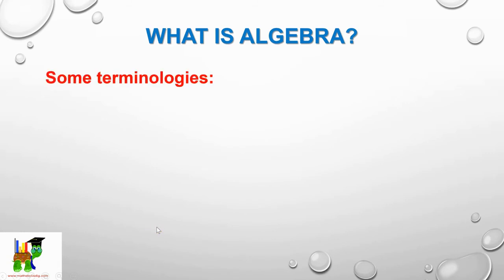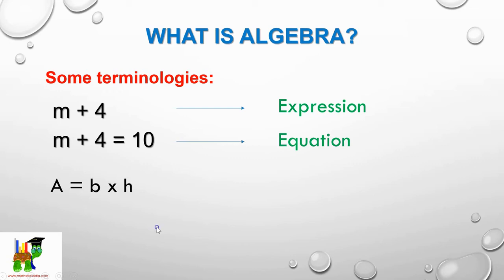So let's learn some terminologies. The first one is what we call expression, the second one equation, and the last one is formula. What is the difference between expression and equation? As you can see, equation has an equal sign—so that is the main difference.